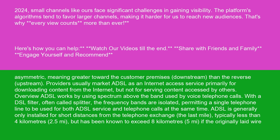ADSL works by using spectrum above the band used by voice telephone calls. With a DSL filter, often called a splitter, the frequency bands are isolated, permitting a single telephone line to be used for both ADSL service and telephone calls at the same time.